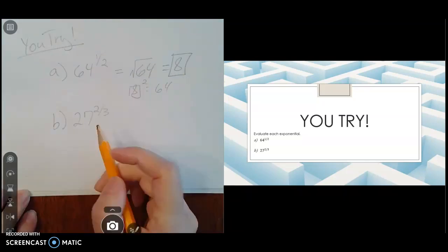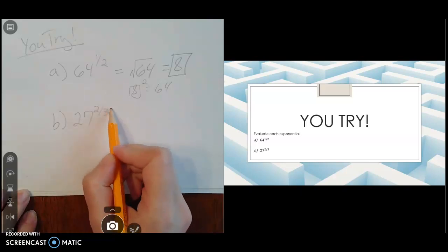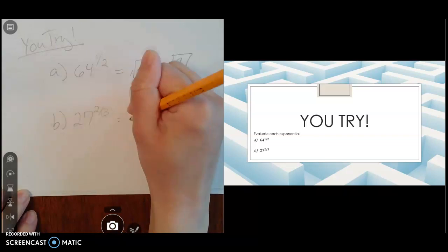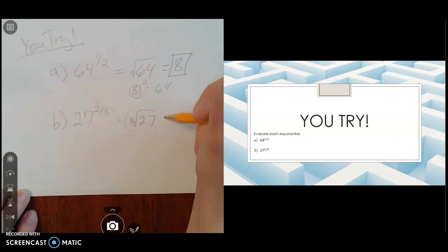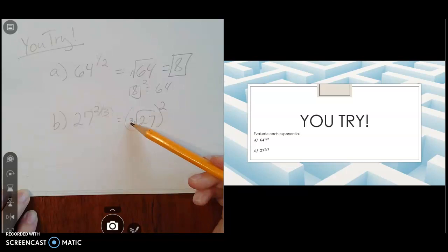Okay, the next one I gave you is 27 to the two-thirds power. So the 3 in the denominator means that we're going to have a cube root of 27, and the 2 in the numerator means that it's going to be raised to the second power. So that denominator number tells me what kind of root I have, the numerator tells me what my exponent is.